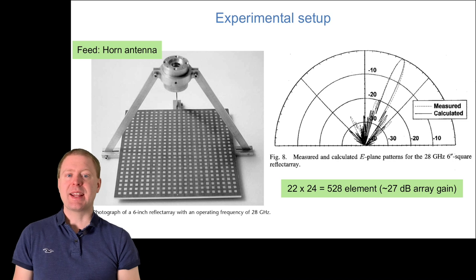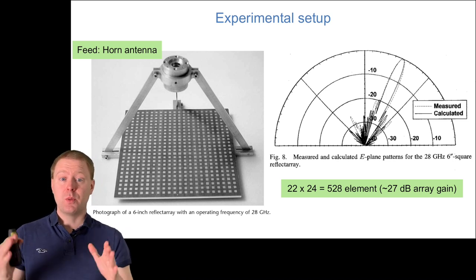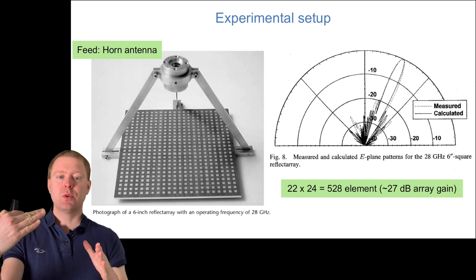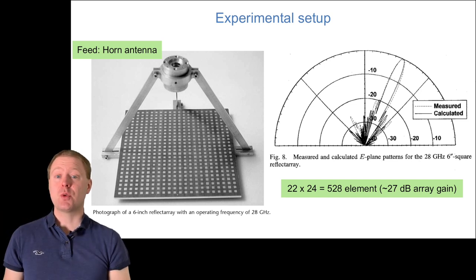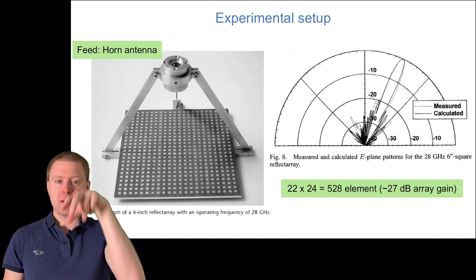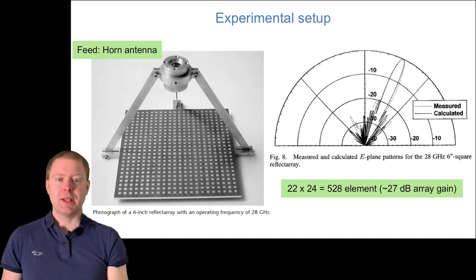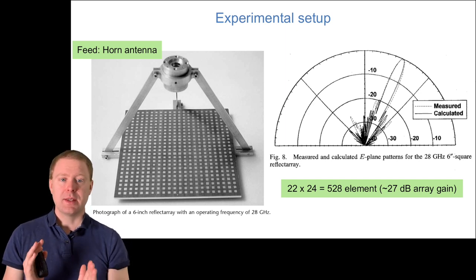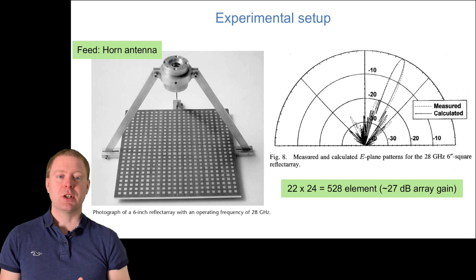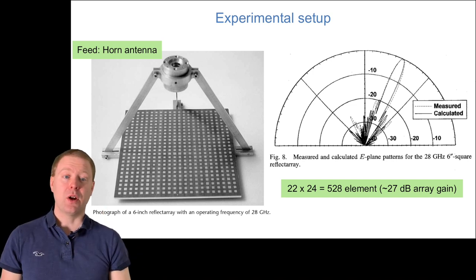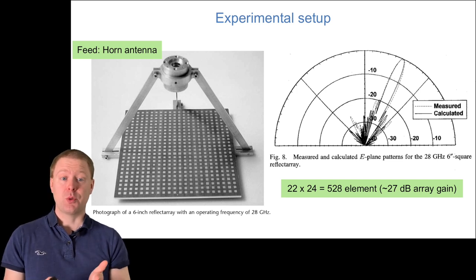Here is an example in an experimental setup. We have a surface with 22 times 24 elements, 528 elements in total. A feed horn antenna illuminates the surface, and as you can see in the graph, the measured and calculated signal is reflected in a particular direction. There's a main beam and some signals going in other directions because there's no perfect reflection.